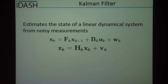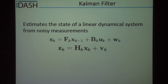The Kalman filter estimates the state of a linear dynamical system from noisy measurements. X is your state and says that your state at the current time is a mix of the state at the previous time, plus some input, plus some noise. Your observation is the state times the H matrix — a transformation to an observation matrix — plus some noise. The F matrix is your state transition matrix, the B matrix is your controlled input matrix, H transforms your state into what you actually observe, and W_K and V are noise.